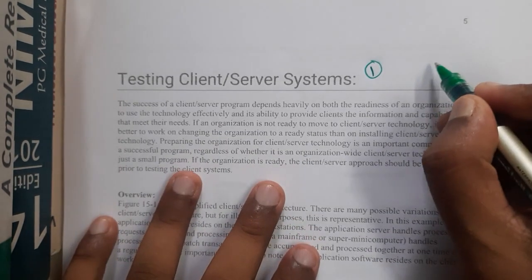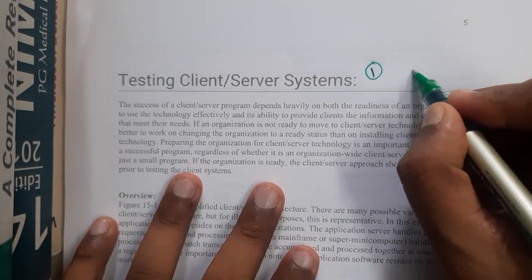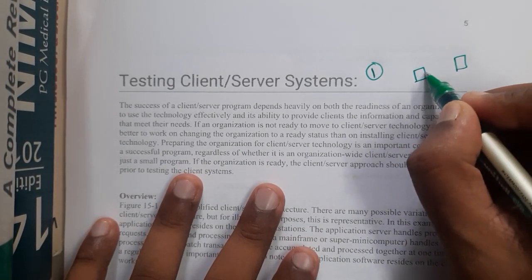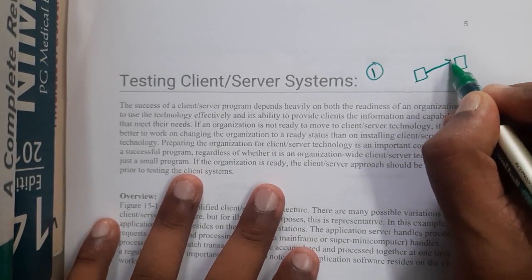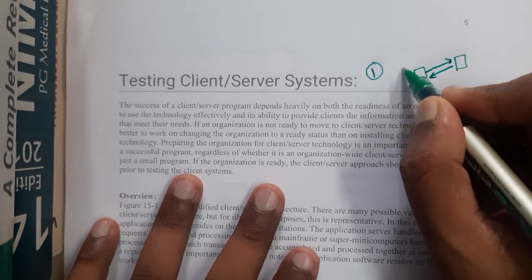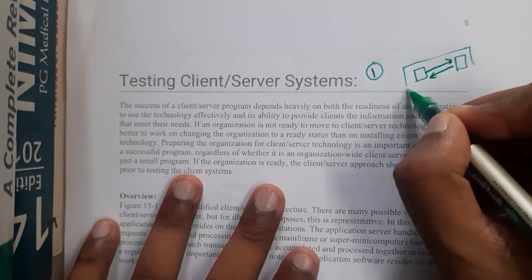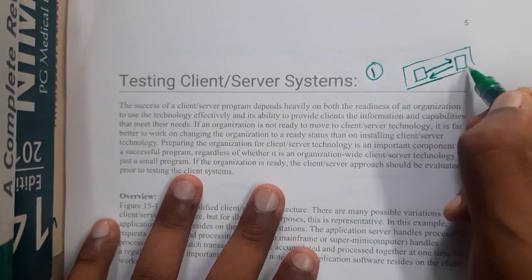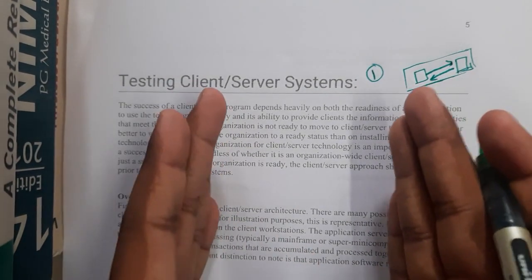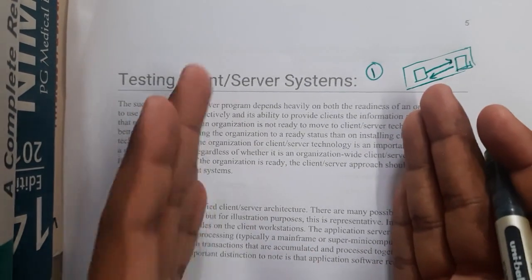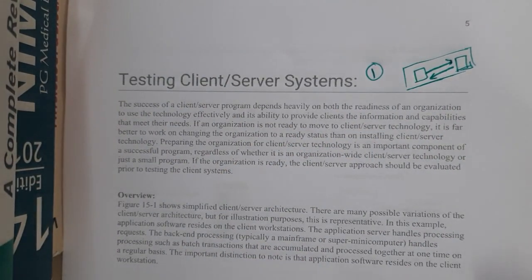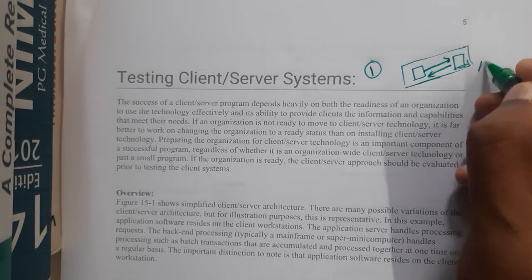Whenever a project consists of a client and servers, the client will be accessing the server for some particular data, and the server will respond with that data. This architecture is called the client-server model. Here one will have the answers for the required questions — it might be a web-based system or any kind of system.